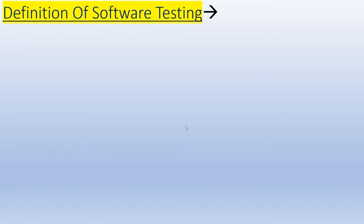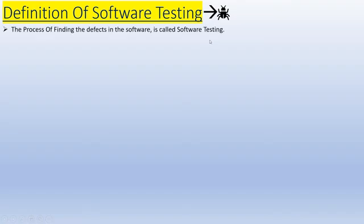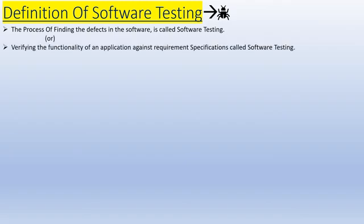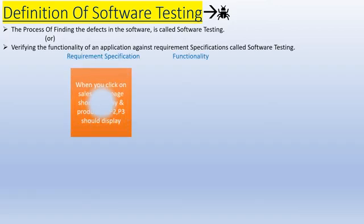Software testing is a process of finding a bug in the software — and here bug means a defect. So it is a process of finding a defect in the software. Or you can say that verifying the functionality of an application against a requirement specification is called software testing.